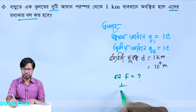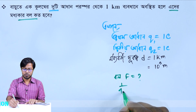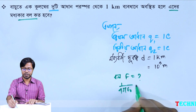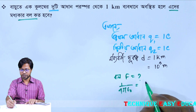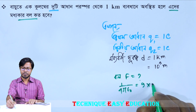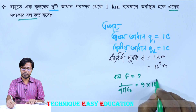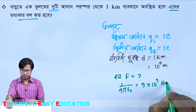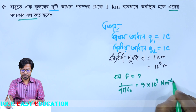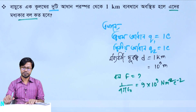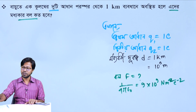C equals to 1 by 4 pi epsilon naught. 1 by 4 pi epsilon naught is equal to 9 into 10 to the power 9 Newton meter square per coulomb square. This is the answer.